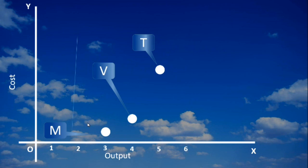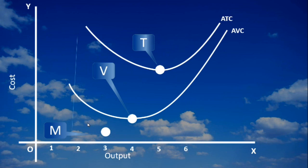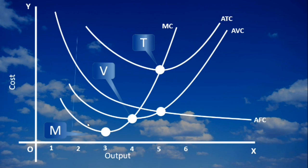Draw average total cost first through the point T. Draw the average variable cost curve through the point V. Draw the MC curve in such a way it passes through all the points right from M. To draw the average fixed cost curve, fix a point right below the minimum point of ATC on the average variable cost curve. Then draw the average fixed cost curve passing through that point.